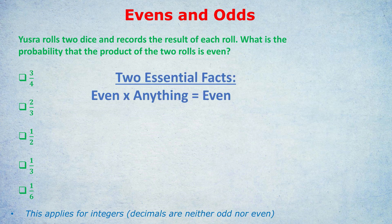First concept: an even times anything is even. I'm talking about integers, because decimals are neither odd nor even. That is the most essential fact you need to know. If you have an even anywhere in a product, the whole thing becomes even.